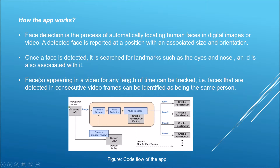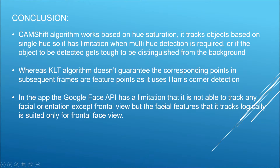Here is the code flow of the app: the camera API of the rear-facing camera sends an image to the camera source, which goes to the face detector, and then to a multiprocessor in my code. This contains all algorithms for face detection and feature detection of happiness and eye-open probability. It has a GraphicFaceTracker class for each face, holding all details. It is not bounded by any size, so no matter how many faces appear in the video stream, it is robust enough to handle them without memory crashes.